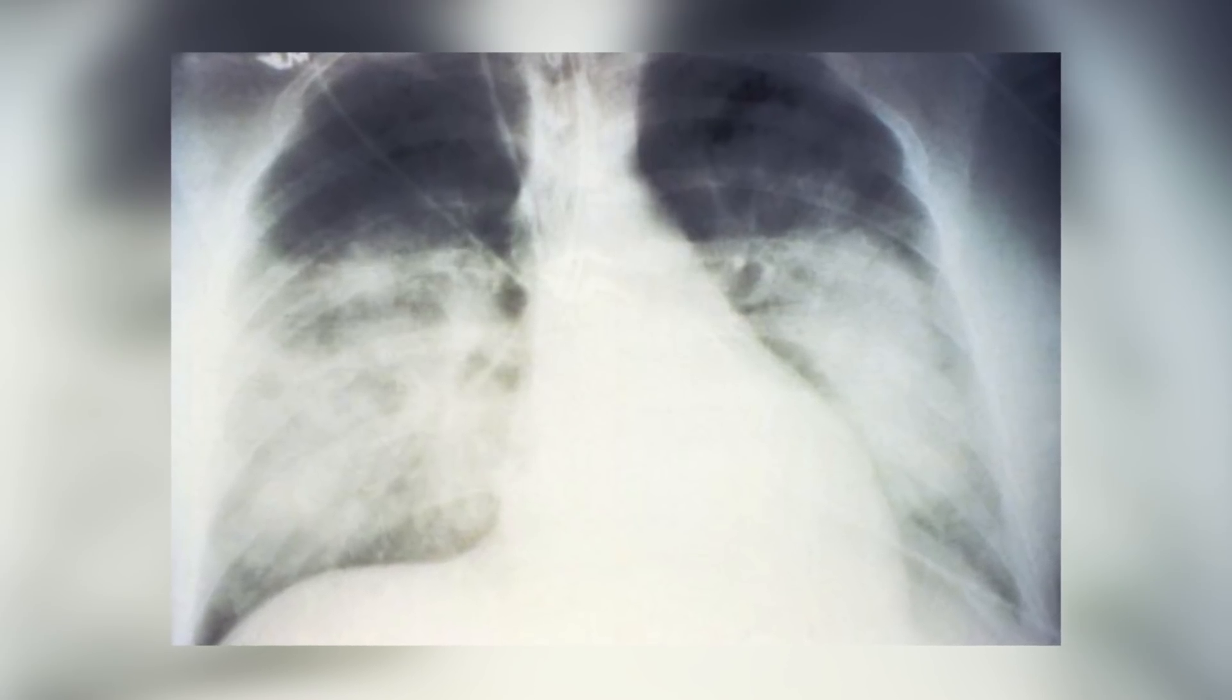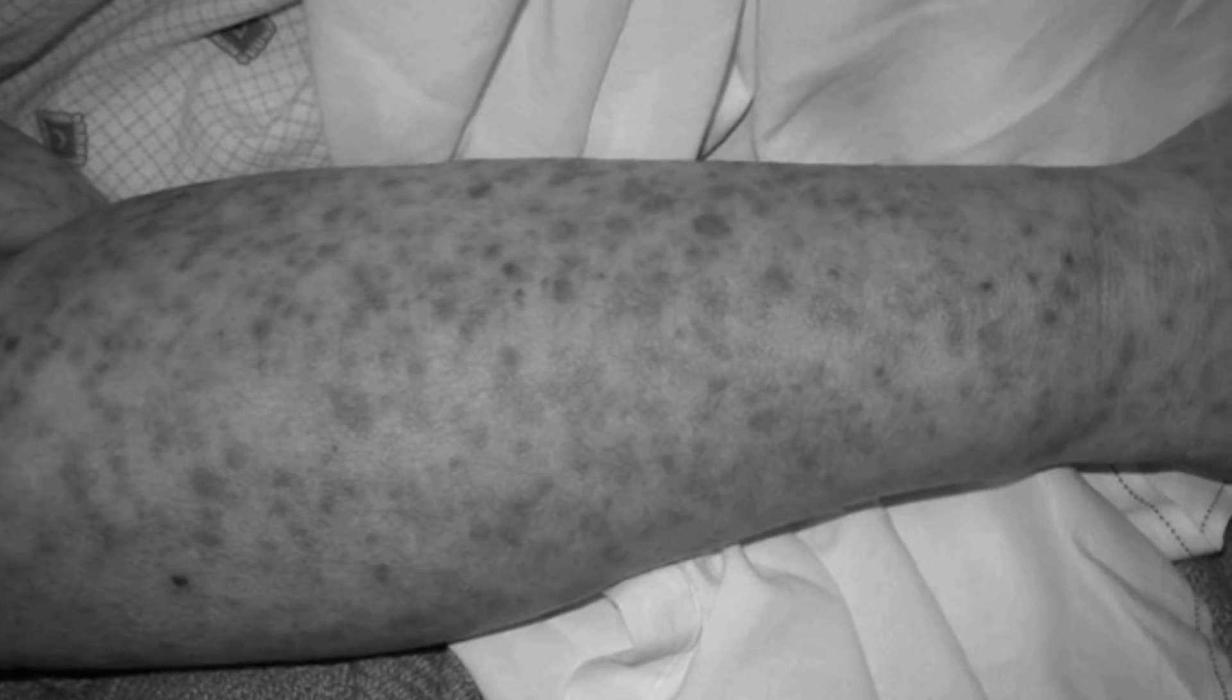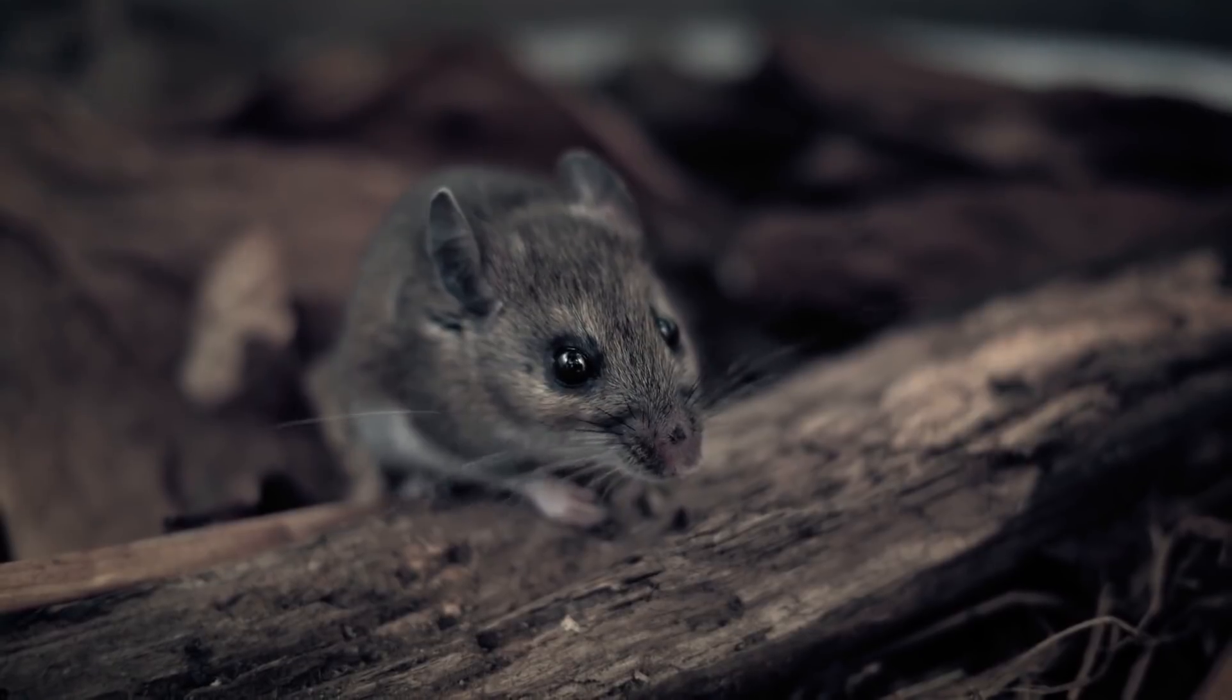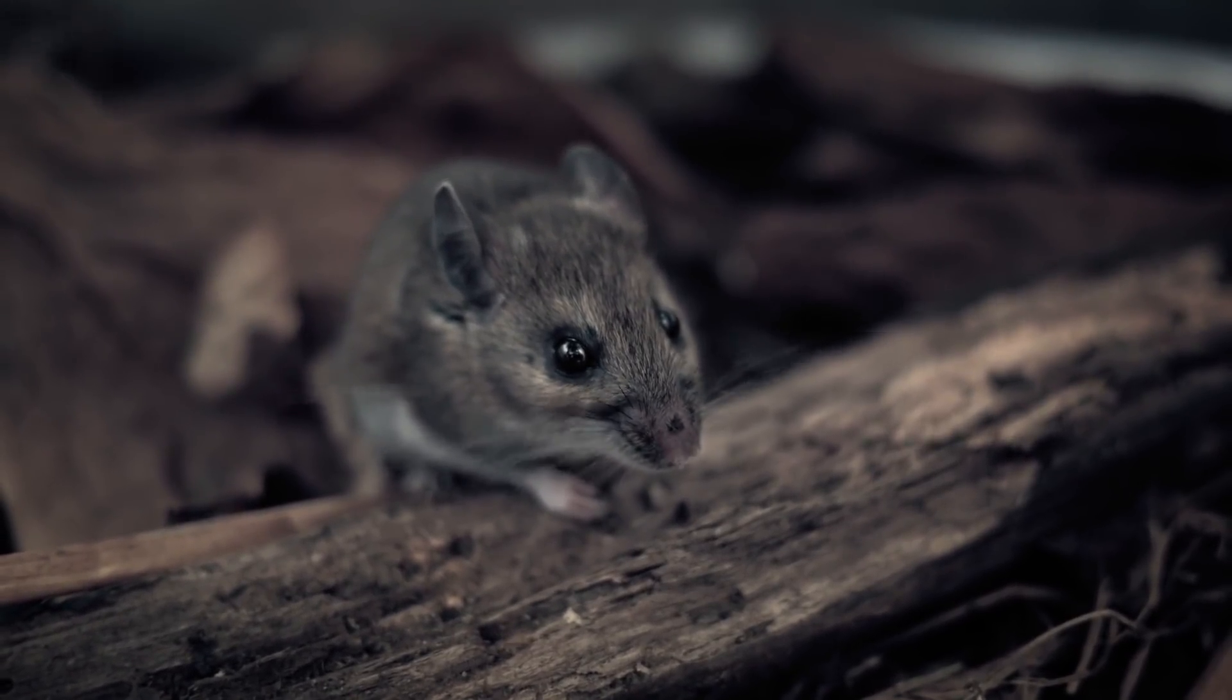Other strains of Hantavirus, mostly in Europe and Asia, are more likely to cause hemorrhagic fever with renal syndrome, also known as HFRS. This is due to the fact that the virus is found in rodents, and depending on which rodent lives in your region determines the type of disease you can contract if infected with the virus.